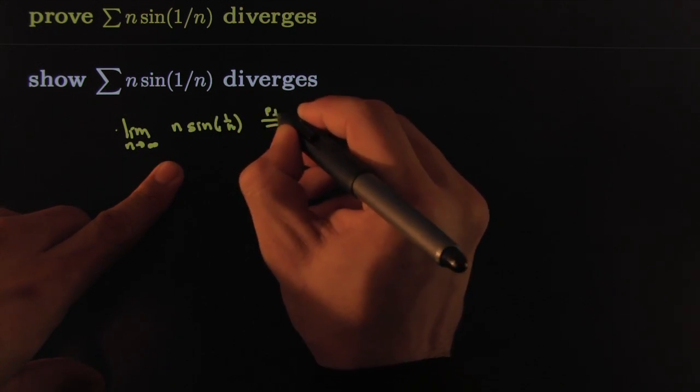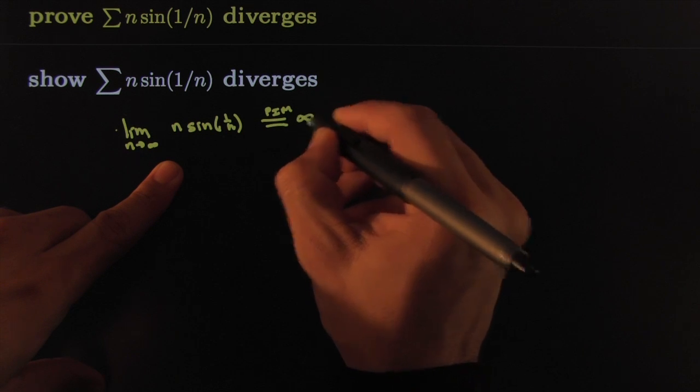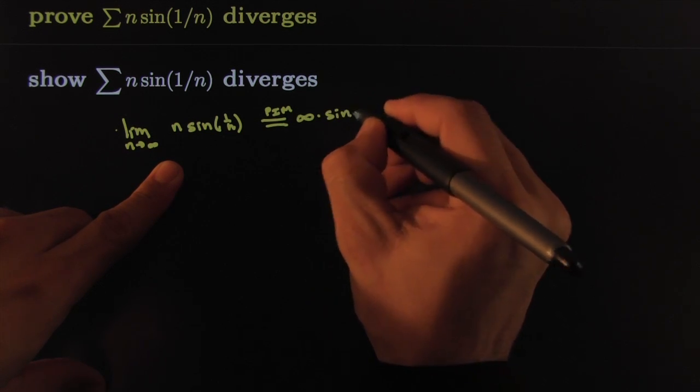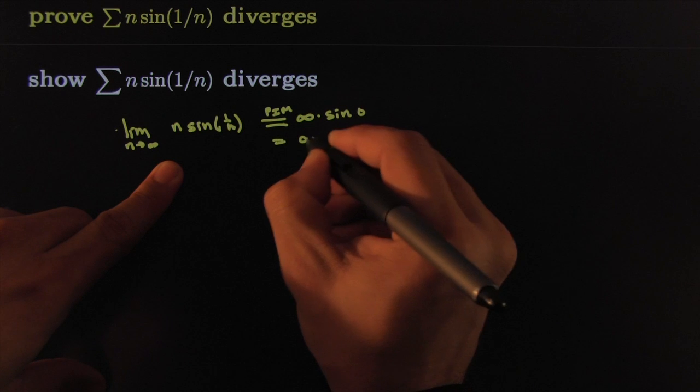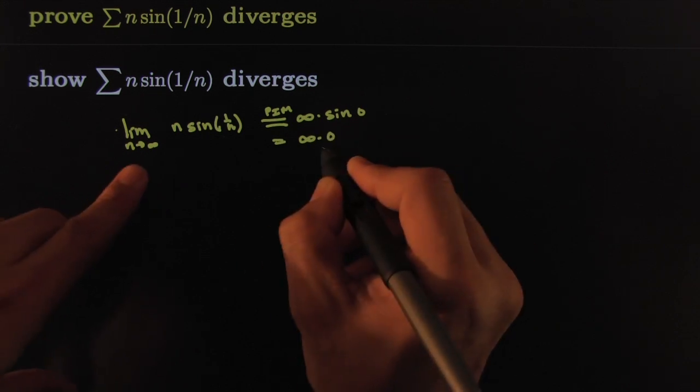Well, your first attempt may be the plug-in method, and that would give you infinity times sine of zero, which of course would give you infinity times zero, which is a famous indeterminate form.